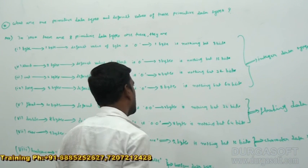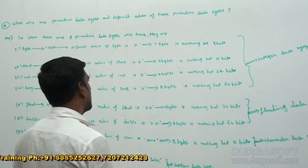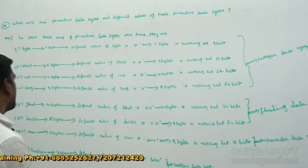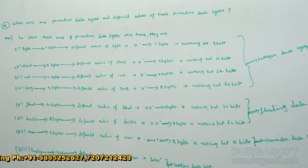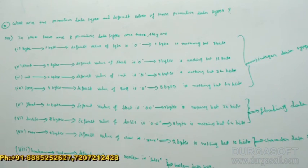Like this, different data types are there in Java. These are all the primitive data types, each having some default value as well as some size.